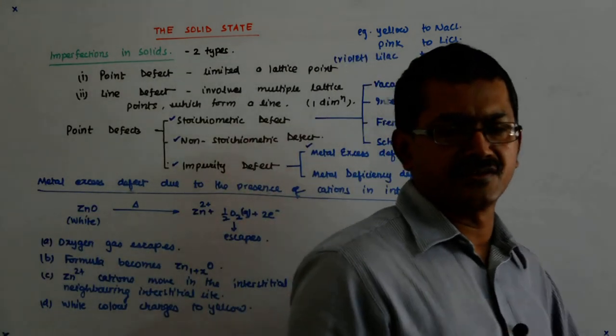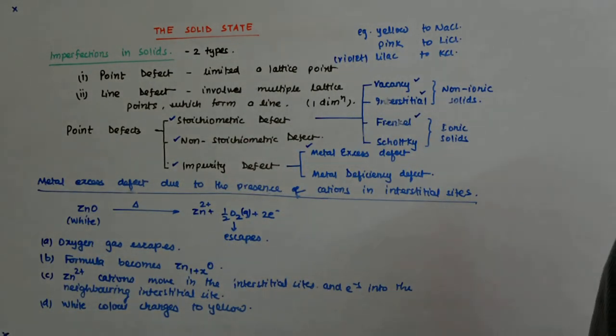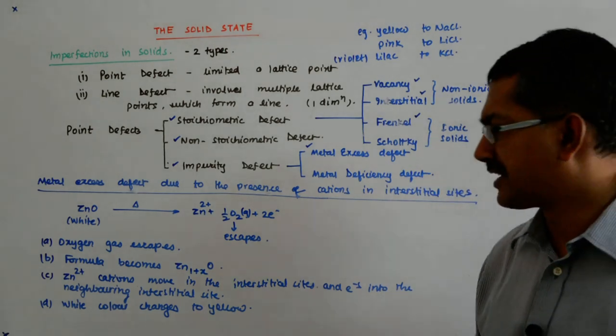Again, this is due to that F-center - it's kind of a F-center that is being created. The electron in a void is a F-center.